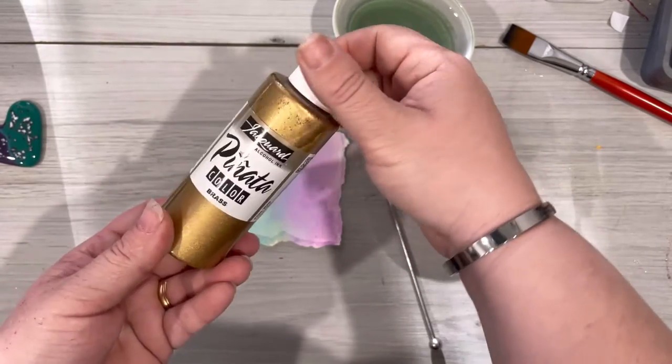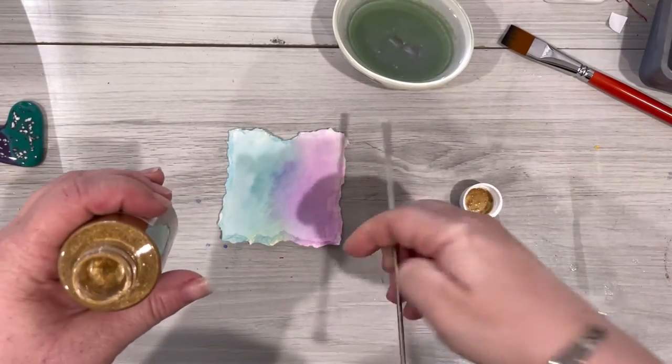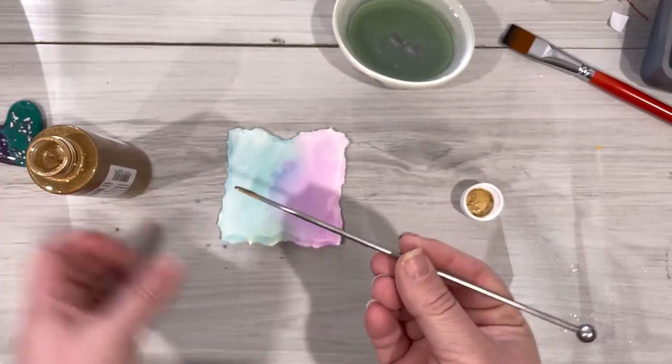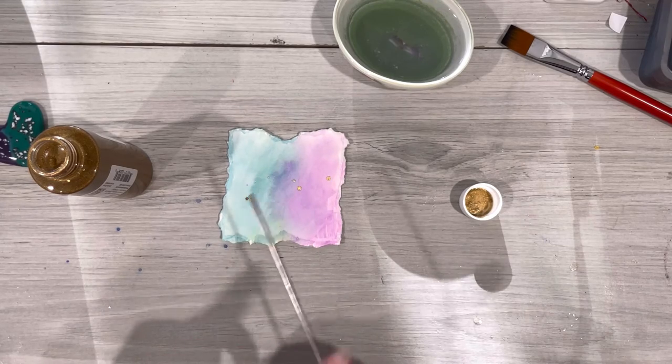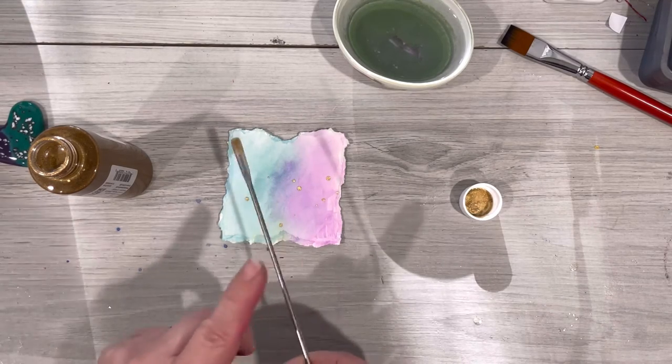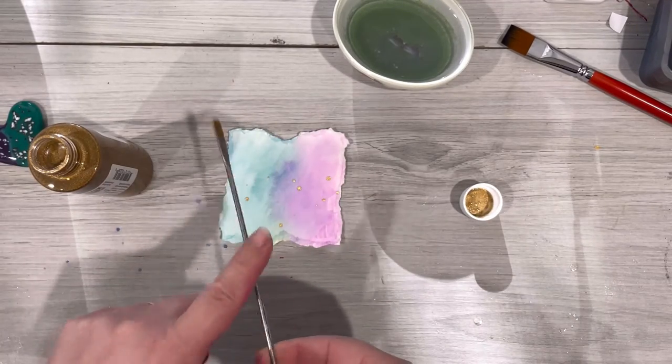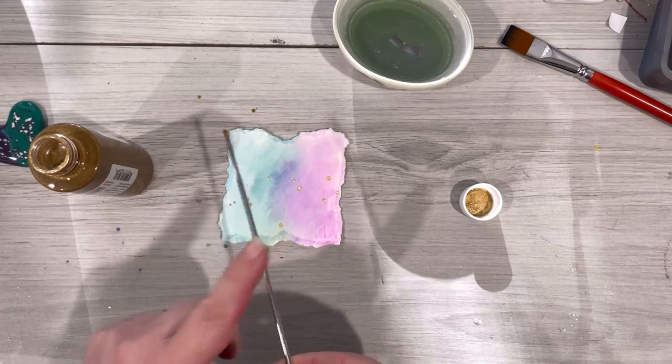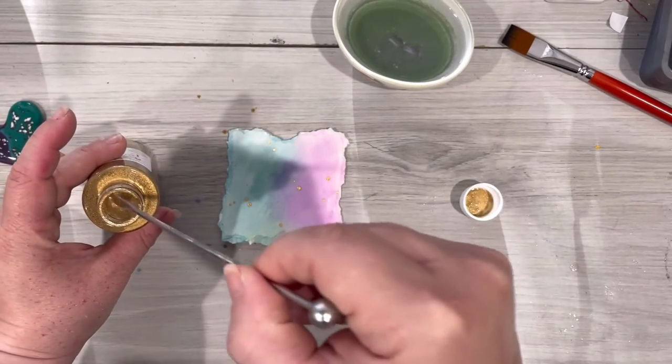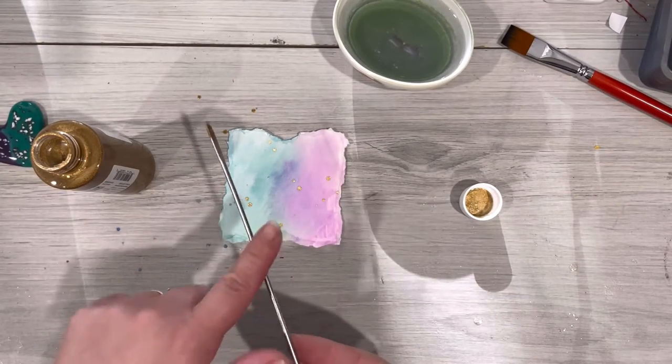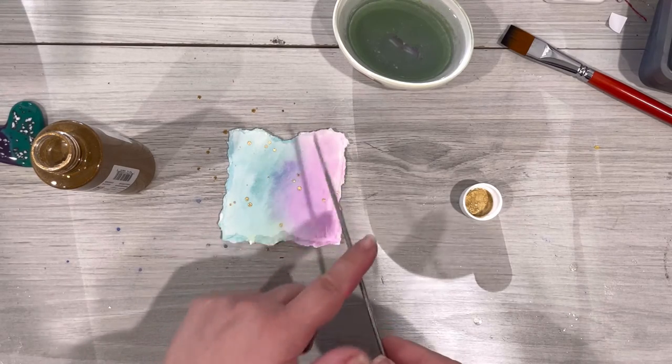So now we're going to come in with some pinata gold brass alcohol ink. I like to use this in mixed media because if you remember water doesn't affect alcohol ink so for this step it's really important to use something that's going to be water resistant or hydrophobic. So for this I dipped in the tip of one of my stir sticks into the ink. Make sure to shake this ink up very well before this step and as you see me here I'm just tapping it off of the stir stick with a flicking motion onto the handle of the stir stick.